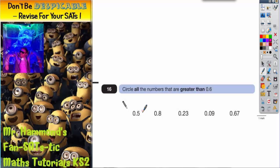So 0.5 is the same as 0.50. 0.8 is the same as 0.80. And these three numbers already have two digits after the point.